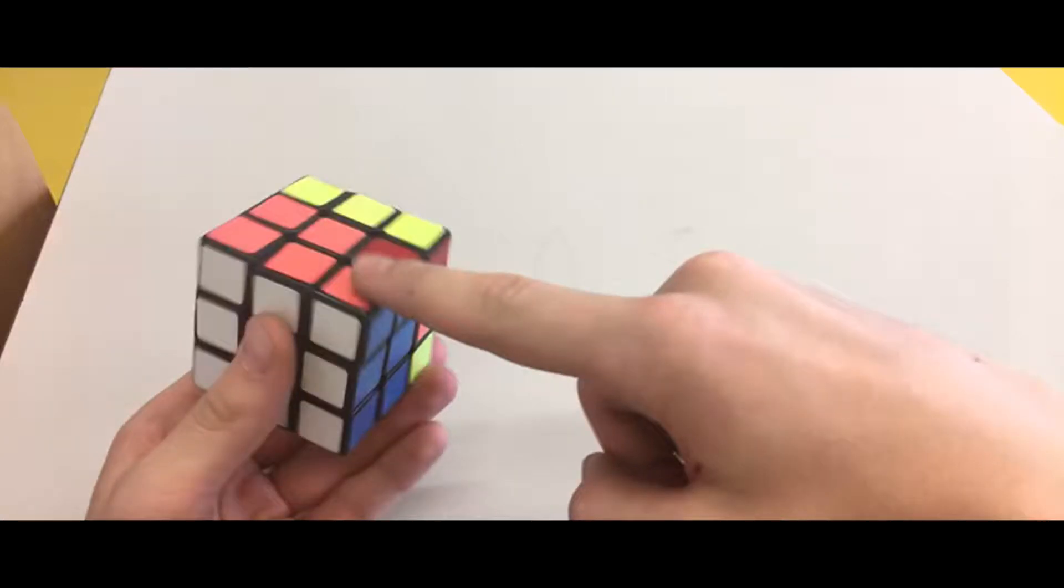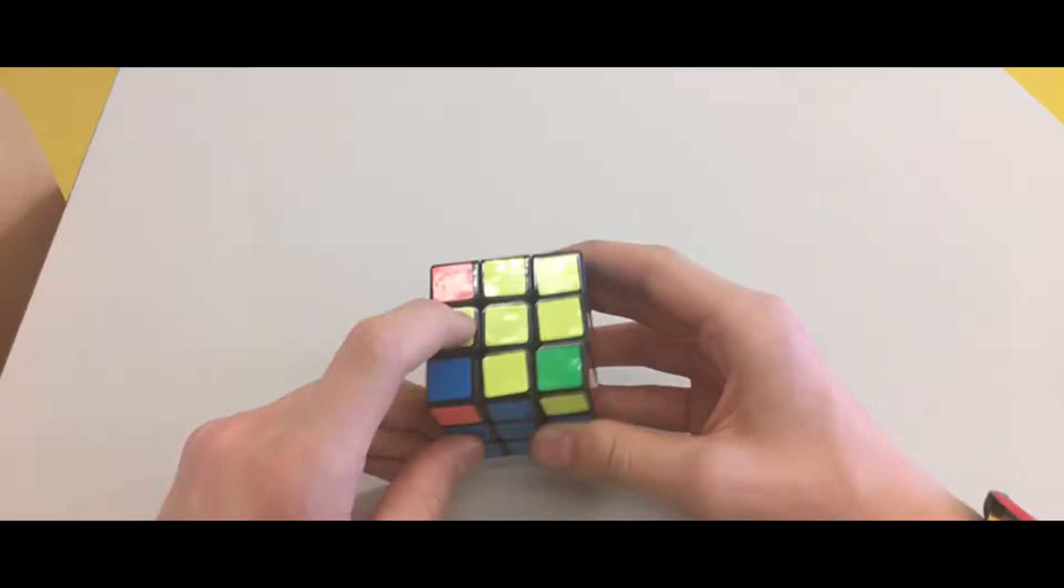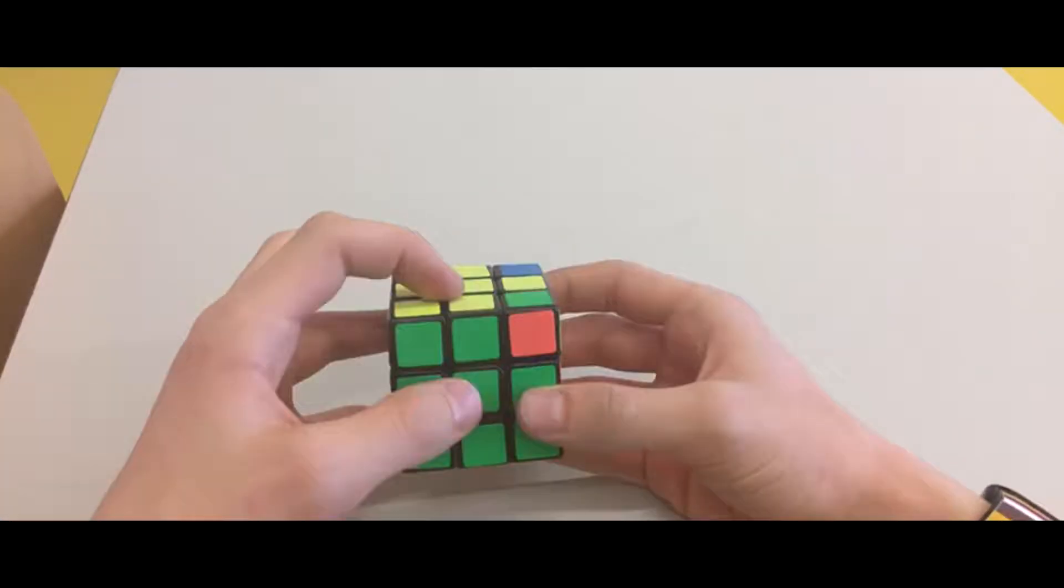So that we build a correct first side. Then we need the second layer, then we need to make another cross and center pieces.